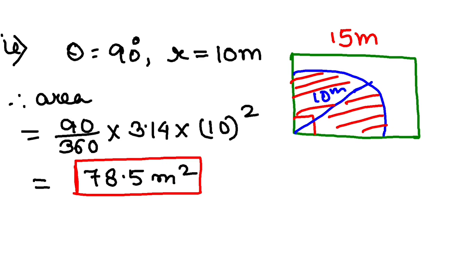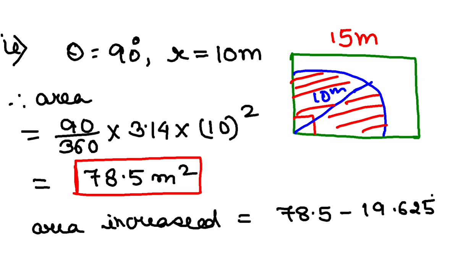They are asking for the increase in area. The area increased is basically 78.5 minus when length was 5 meters, which was 19.625. If I subtract, I will find the increase in area, which should be 58.875 meter square.